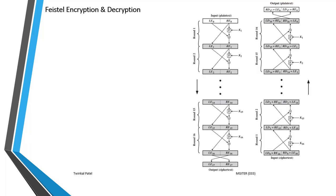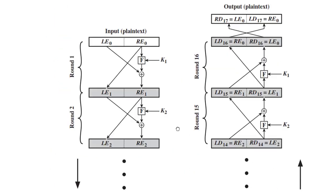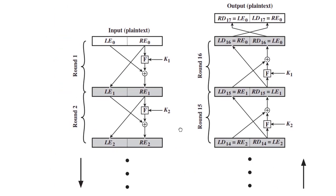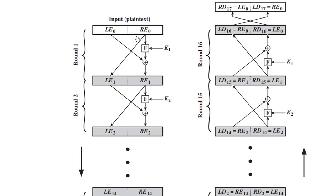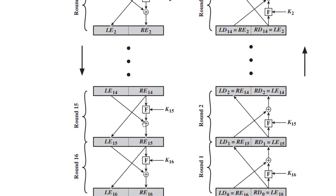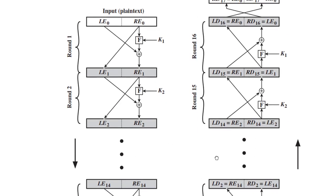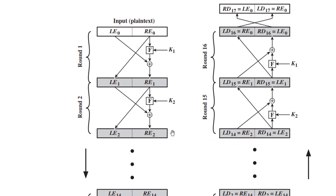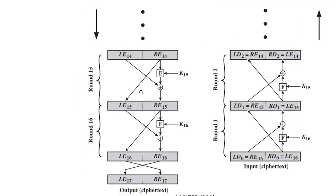Next we will see the encryption and decryption process in the Feistel cipher structure. This diagram shows both processes — the left side shows encryption and the right side shows decryption. The output of the encryption process is the ciphertext. We have already discussed the round-by-round process, and generally there are 16 rounds in the Feistel cipher.